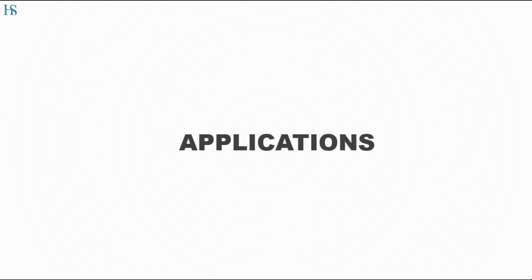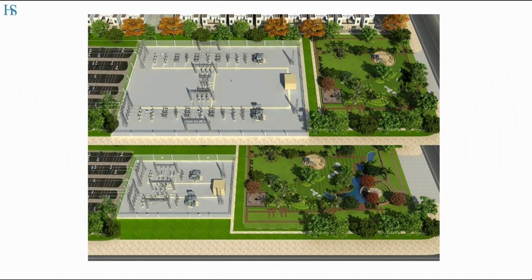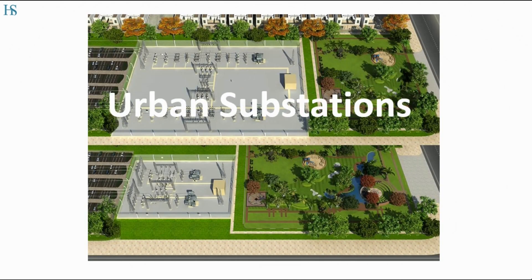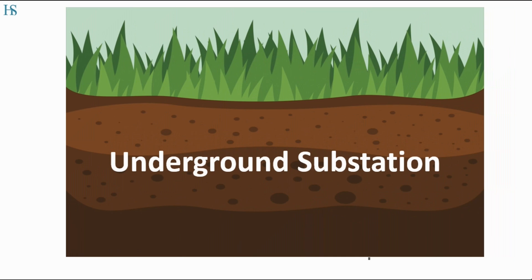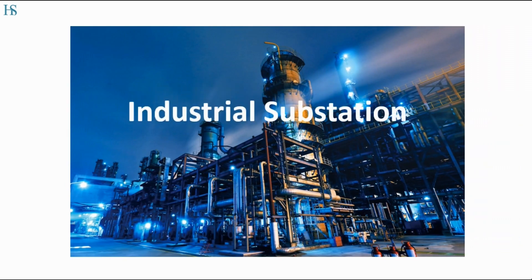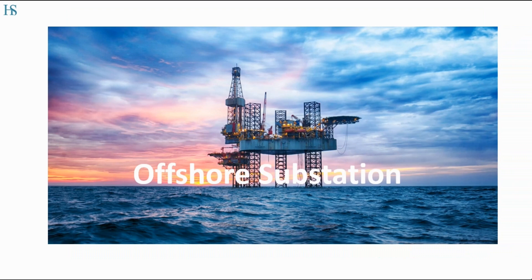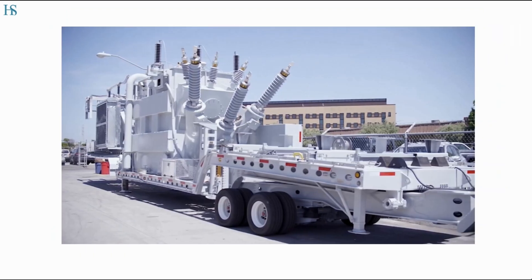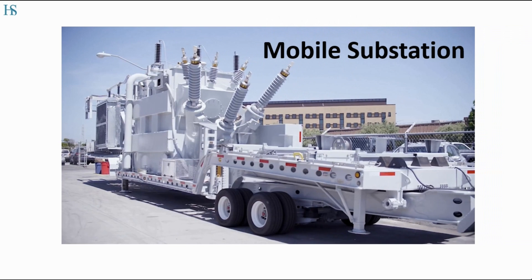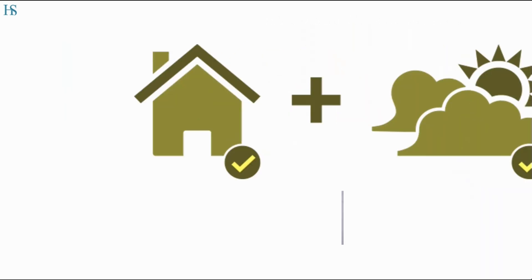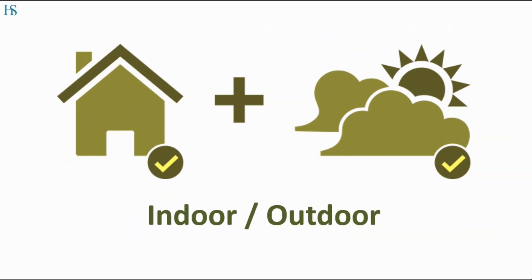Having briefly understood what GIS is along with its major components, let us look at its applications. GIS is installed in urban areas where availability of space is a constraint. It can also be installed underground or in industrial areas, on offshore oil exploration, wind farms, etc., or for temporary requirements we have mobile substations where size is a concern. Thereby we observe that GIS is used for both indoors and outdoor applications. However, AIS is restricted only for outdoor use.